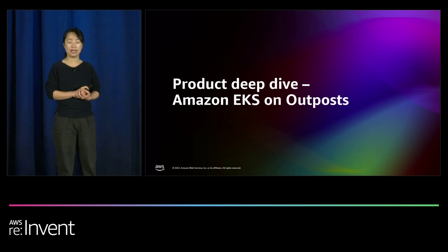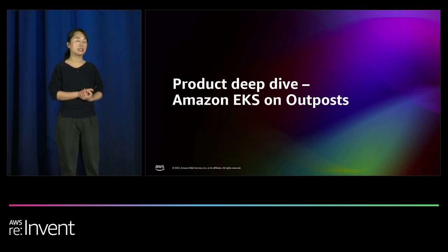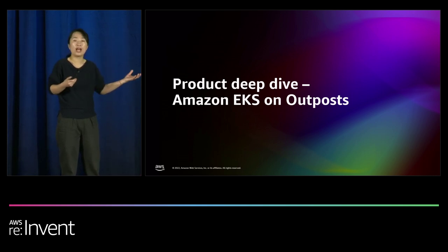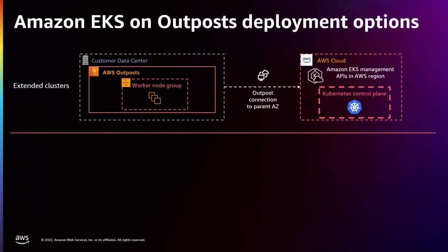Now let's look at EKS on Outpost. Outpost is also Amazon-supplied and supported hardware, meant for strongly connected use cases — it's a rack you put into your own on-premise data center, but you need strong connectivity back to an AWS region. Many AWS services available in regions are also available on Outpost; it's meant to mimic a mini AWS region living inside your data center. Previously, the architecture split the cluster in two: the control plane lives in the cloud inside the AWS region, and worker nodes live on the Outpost hardware in your data center.